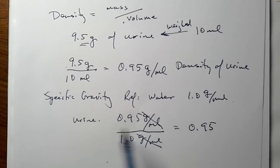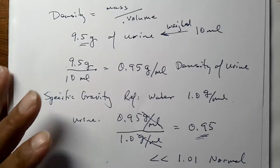There's obviously something terribly wrong with this urine, because it's much less than the lower level of 1.01 normal for the normal specific gravity of urine.